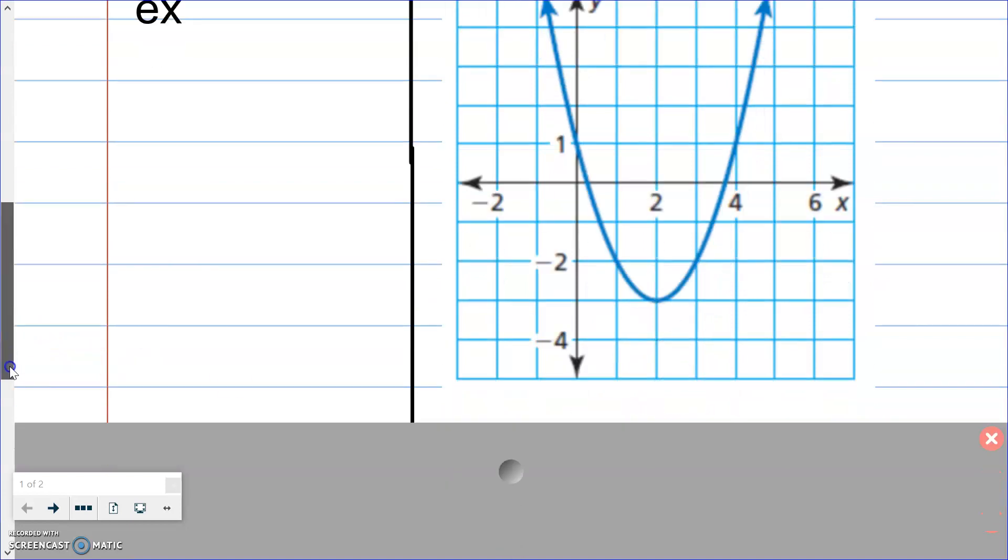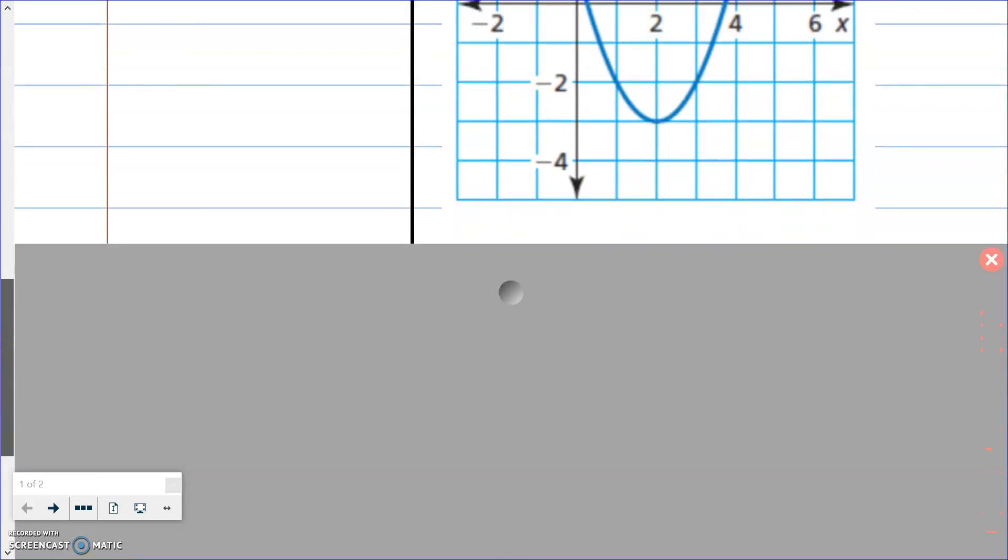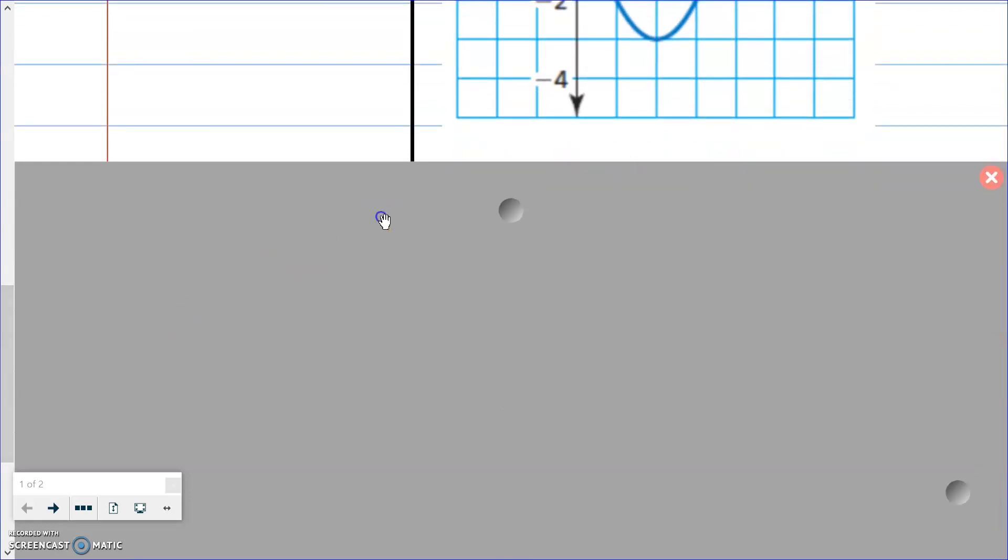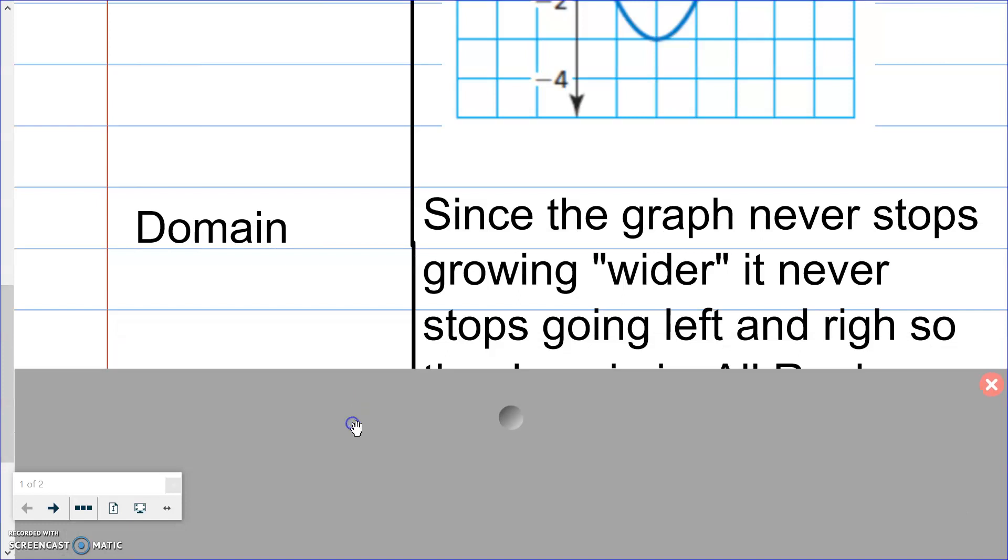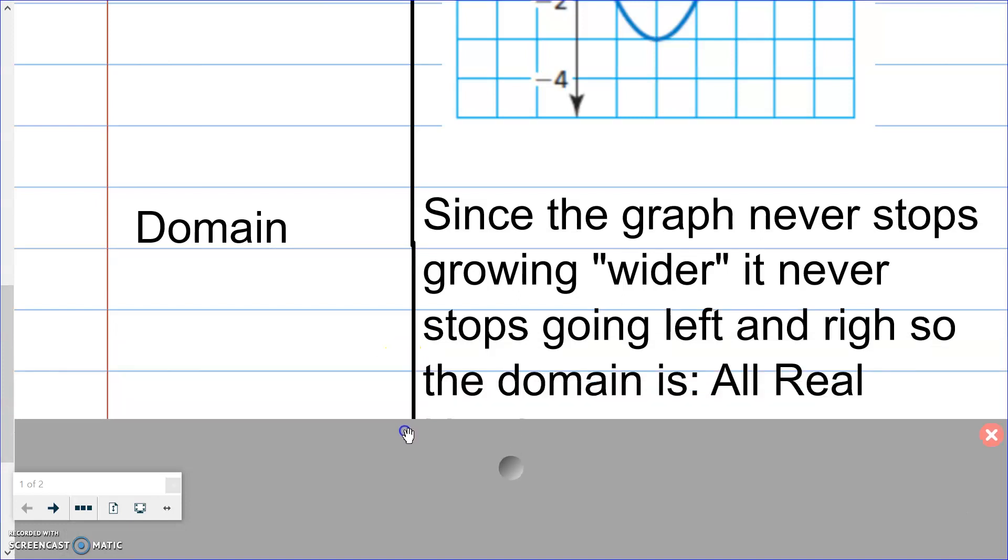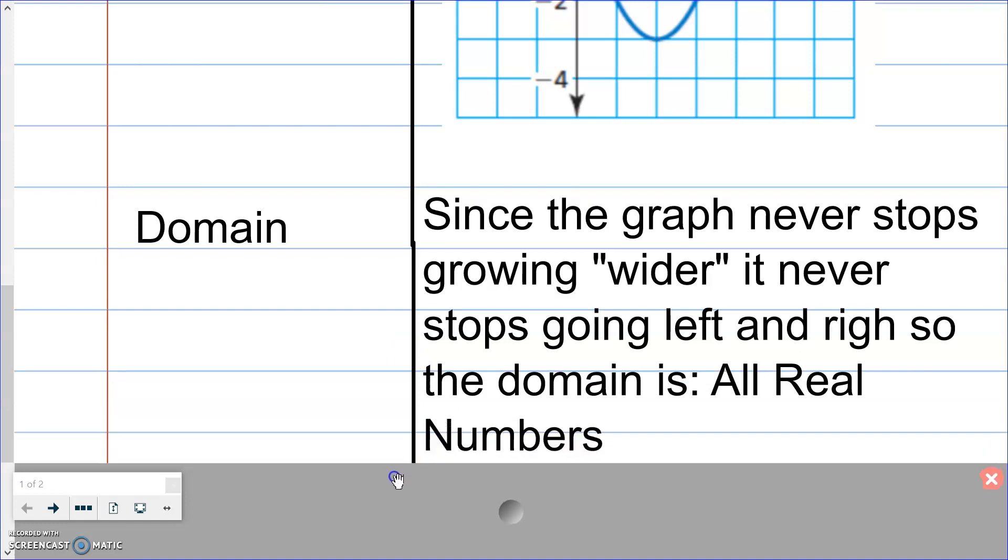Since we use all the x's, our domain is the x's that we can use. And since the graph never stops growing wider it never stops going left and right. So the domain is all real numbers. That's how we write that. To use all the x's and the negatives and positives it means that we use all real numbers.